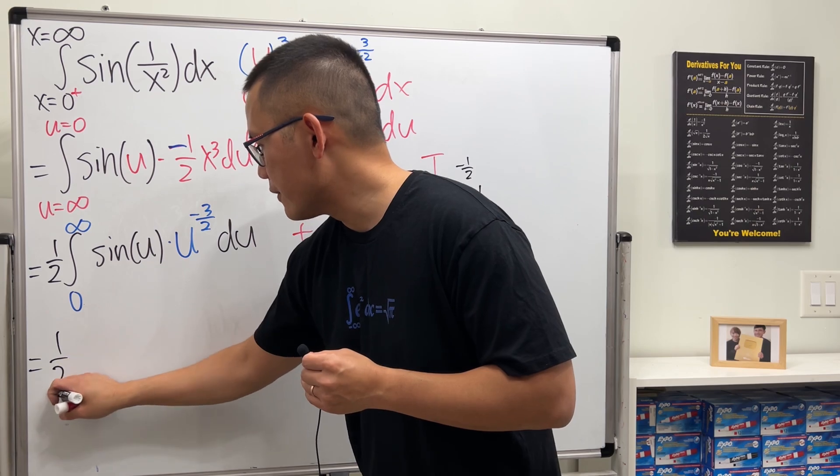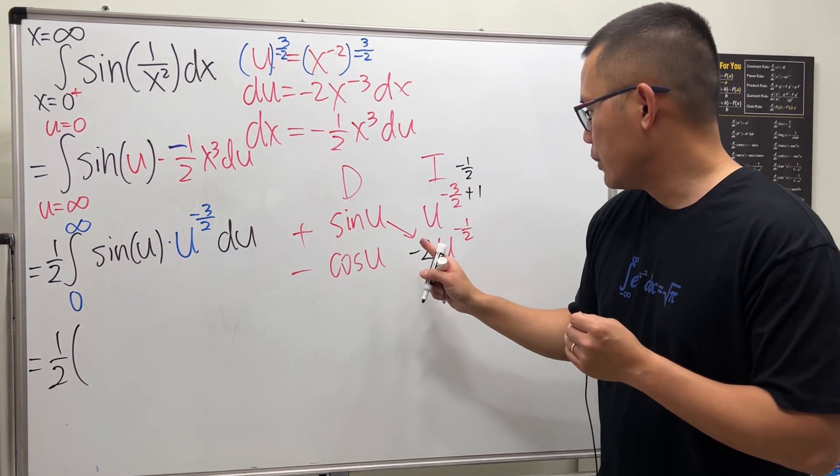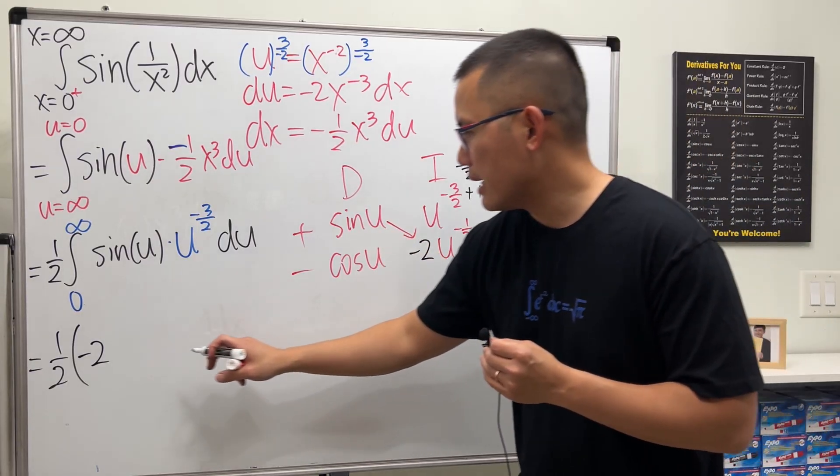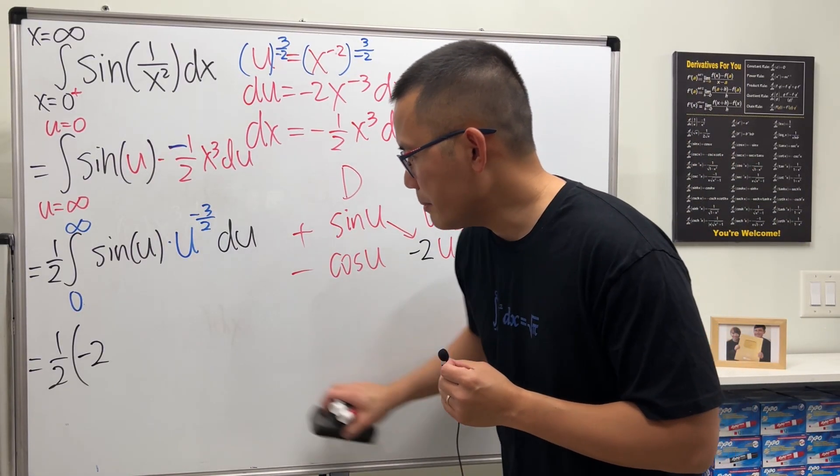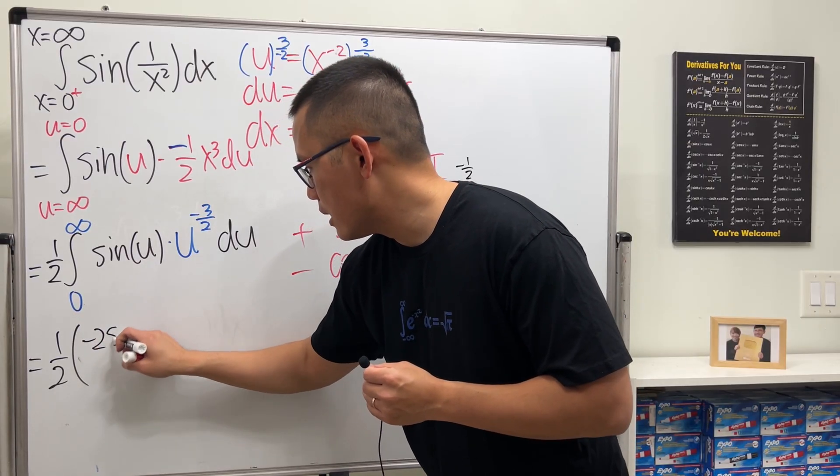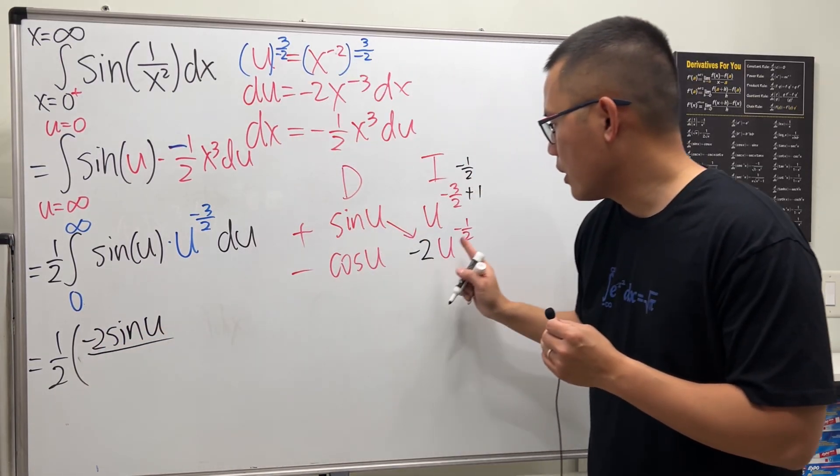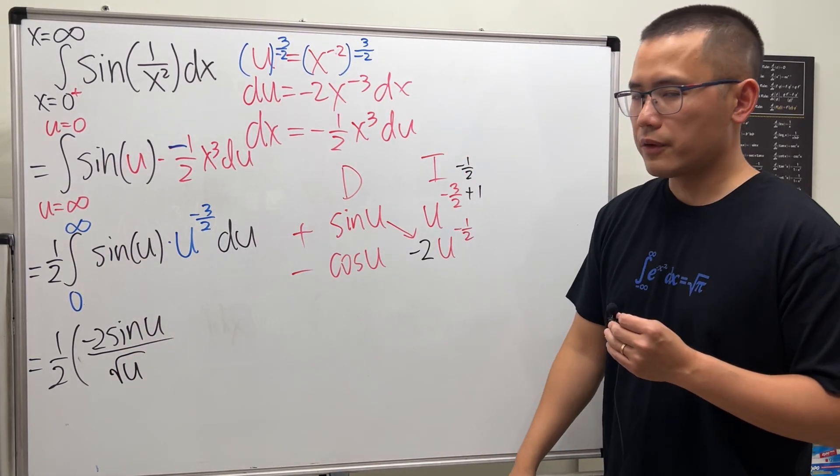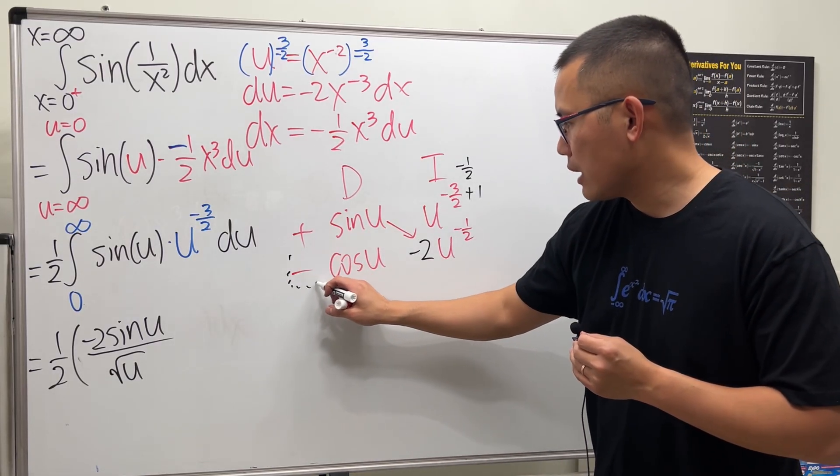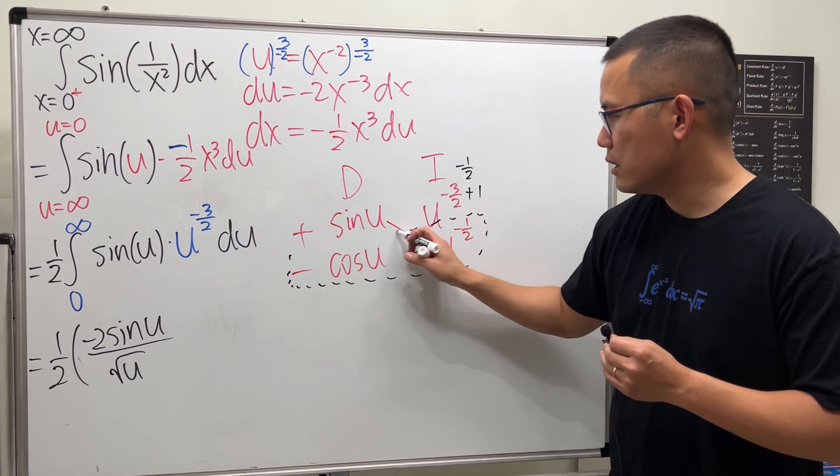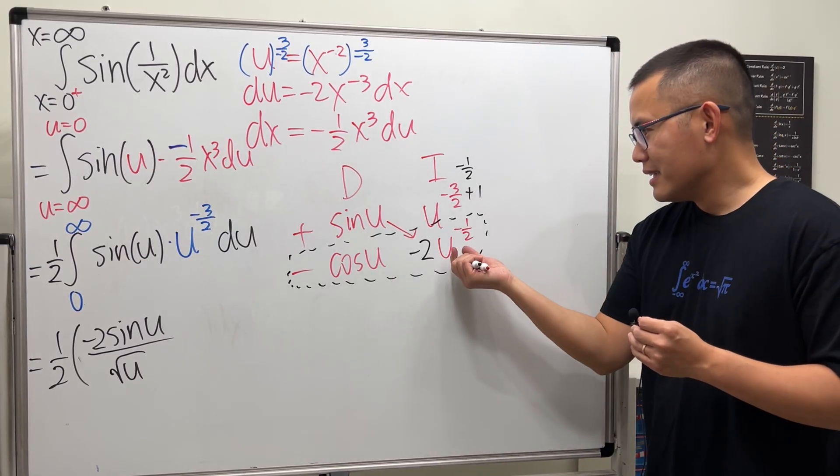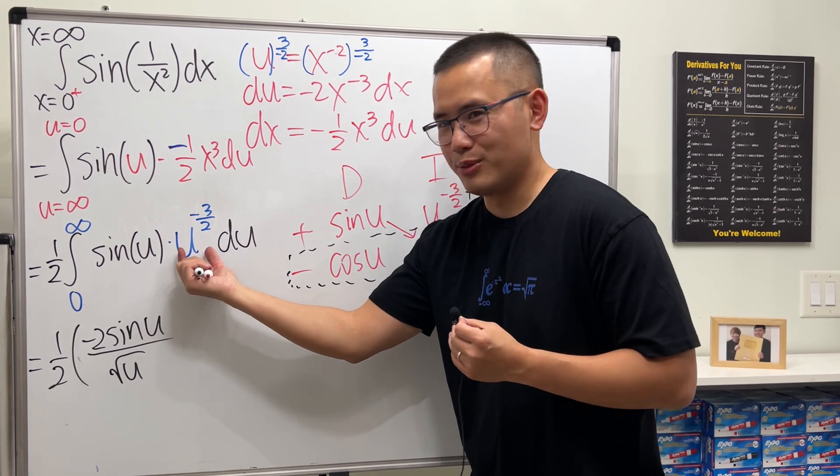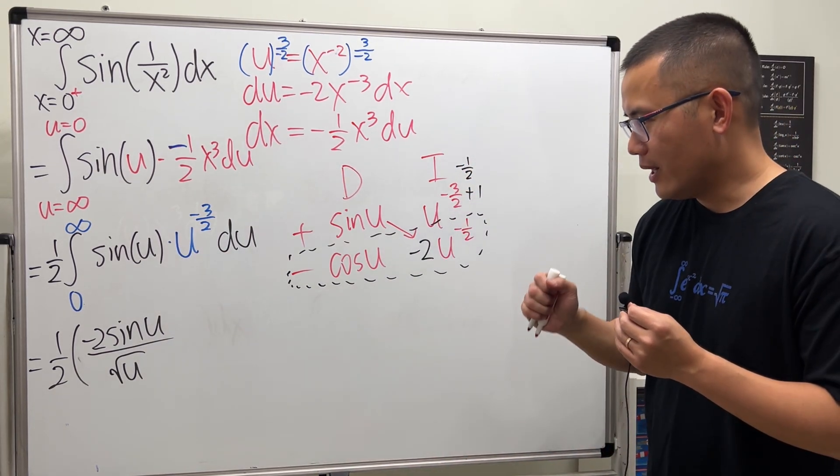So, we have 1 half in the front. And then we have negative 2. And I'm going to just multiply by sine u on the top. And then I will like to put down over. This is the same as square root of u. So, that's the first part of the answer. As you can see, this power is negative 1 half. It's, I think it's better than this one right here. Okay. So, hopefully, we're on the right track.